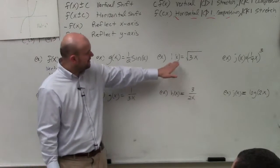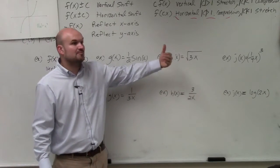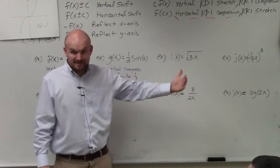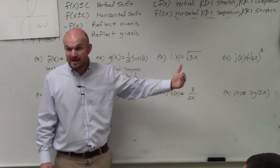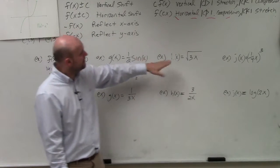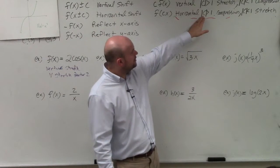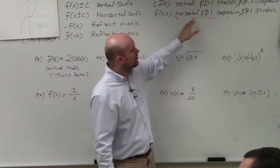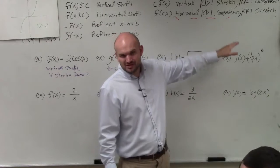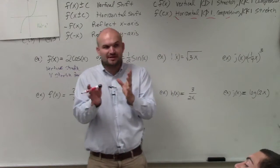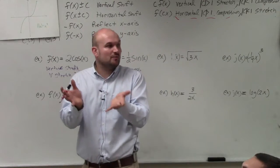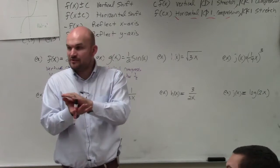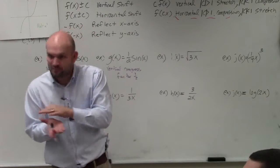This next one, h of x — you can see that I am multiplying a 3 inside the function. It's under the radical; it's inside the function. The absolute value of C is 3, which is greater than 1, so it's a horizontal compression. You guys see they're flip-flopped: if it's greater than 1 for vertical it's a stretch, but if it's greater than 1 for horizontal it's a compression.